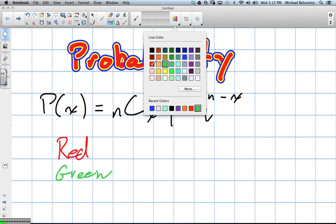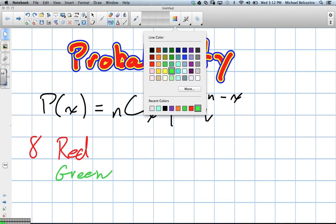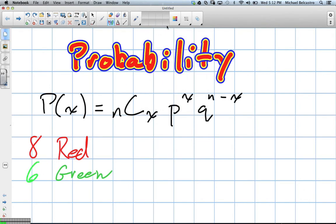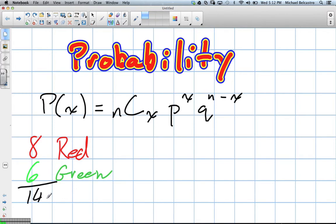It turns out, somebody's counted them all, that there are eight red candies and six green candies, so that's going to give us a total of 14.